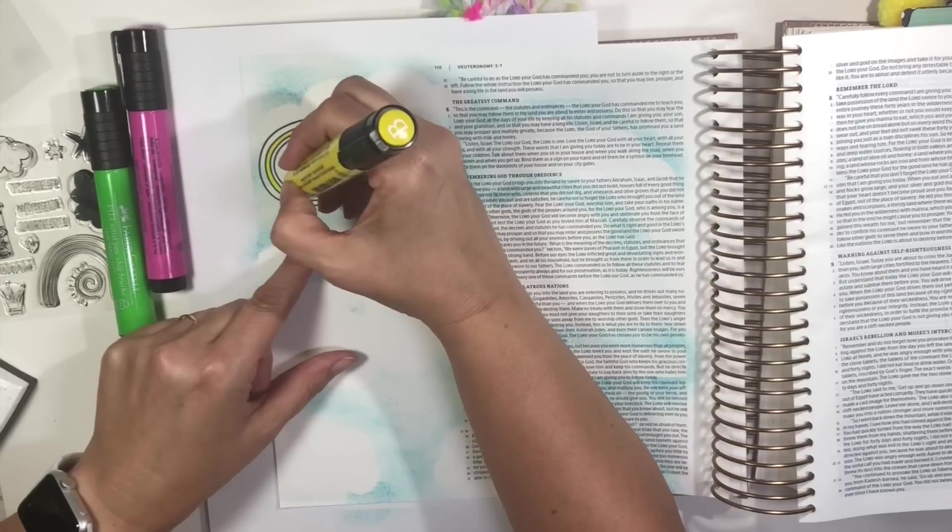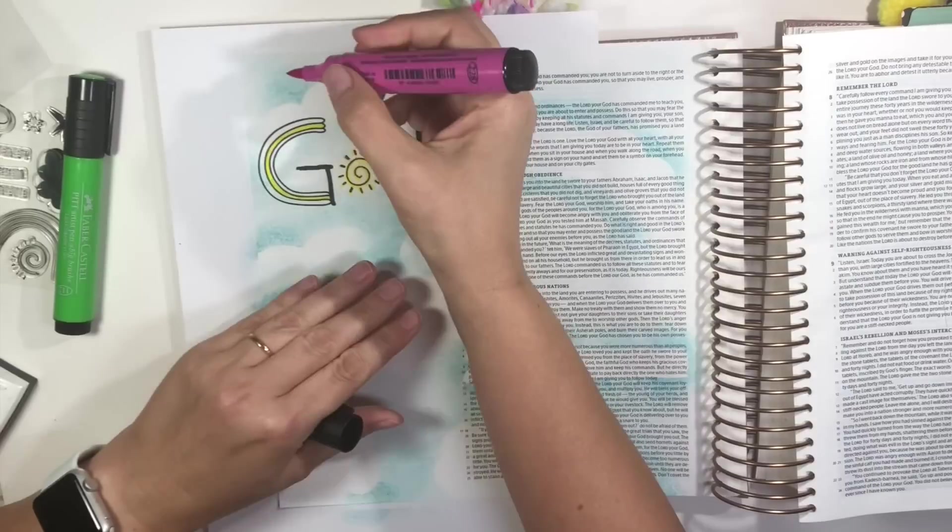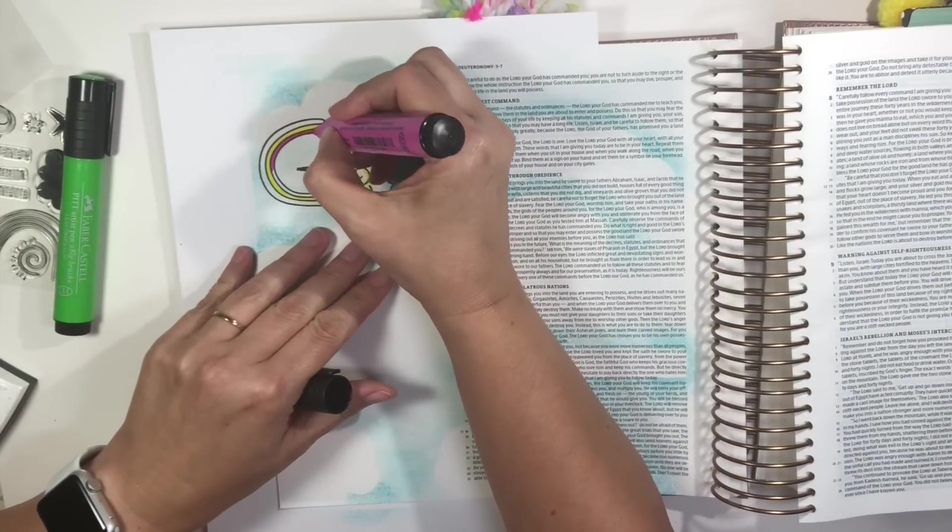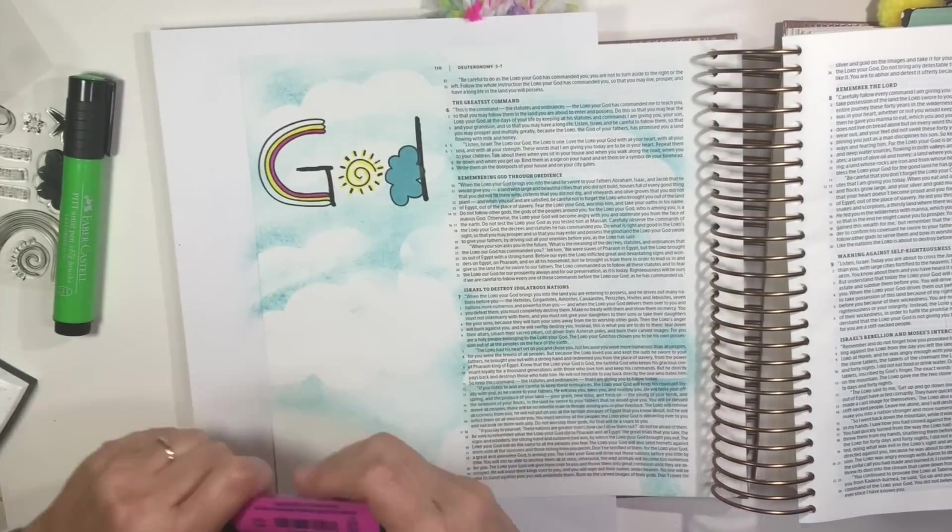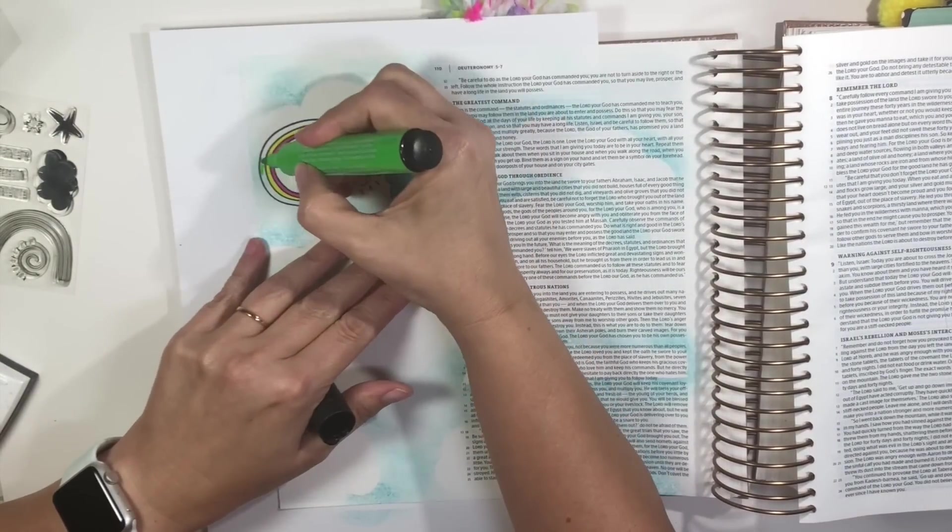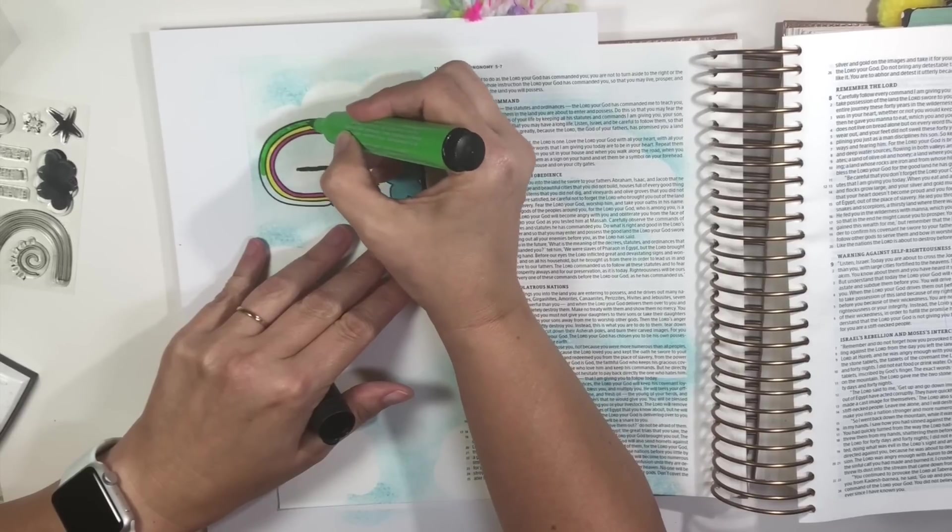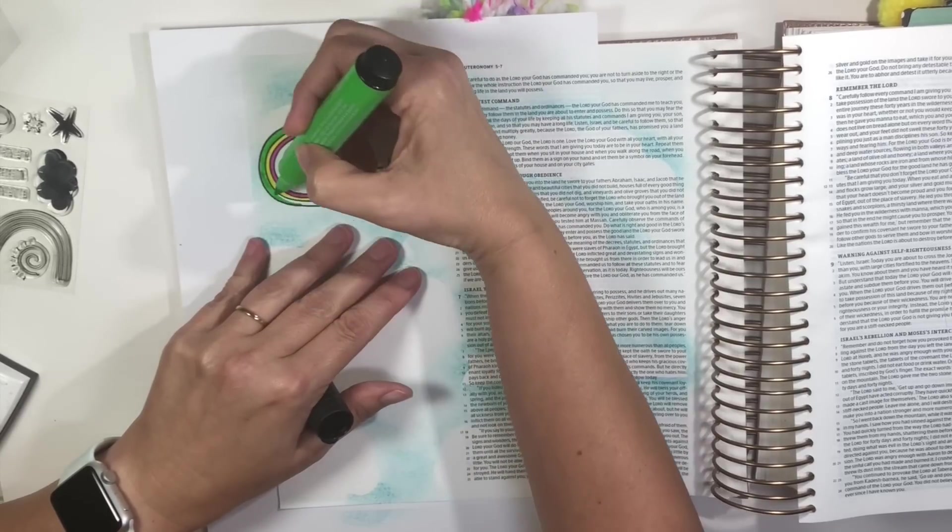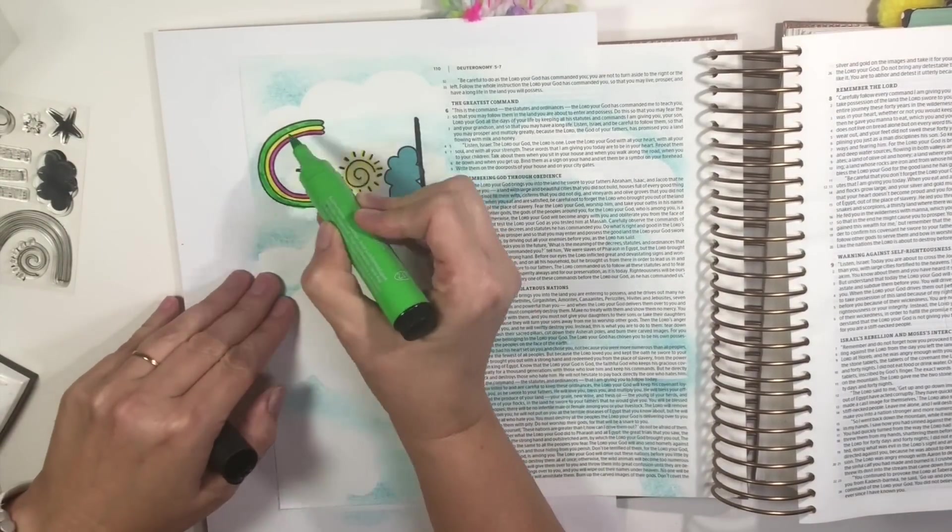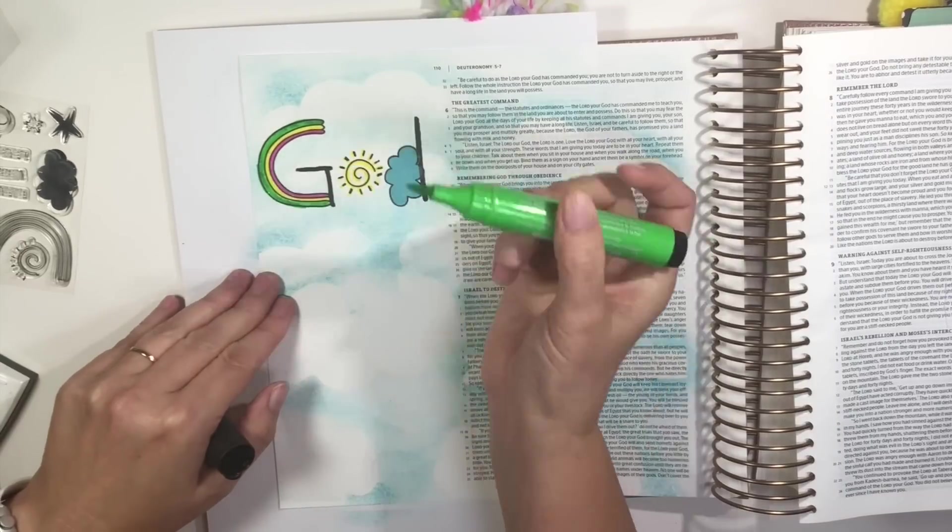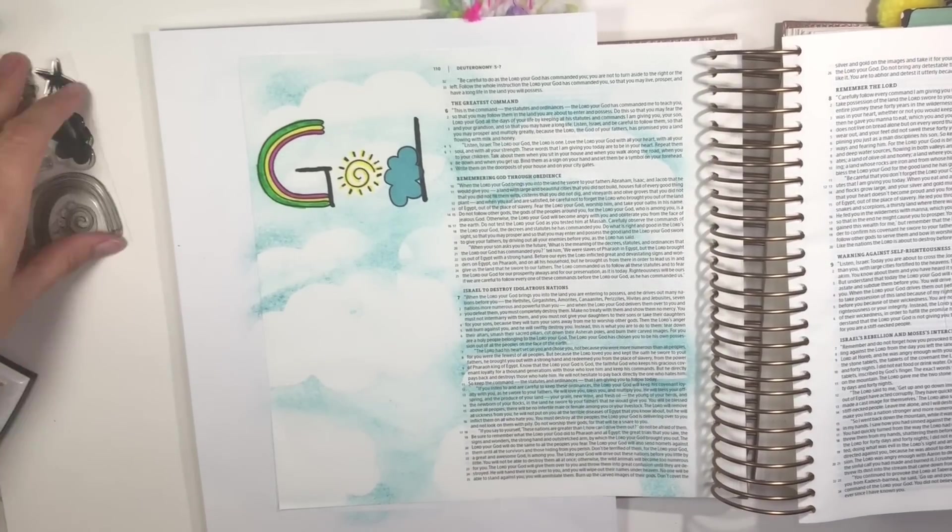Be clever and creative. Don't be afraid to use stamps in different ways than they are really intended to. So, that G was made out of the rainbow stamp, and that cloud certainly wasn't meant to be a D, but you make it into what you want it to be.